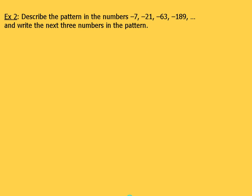Now, let's take a look at the second example. This one, we've got a little bit more to do here. We've got this pattern of numbers: negative 7, negative 21, negative 63, negative 189, and it keeps going. These three dots right here, that means the pattern continues.